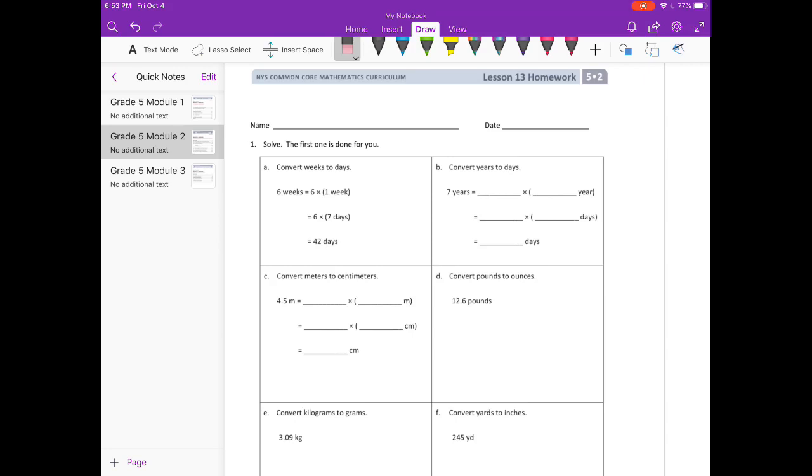Convert years to days. 7 years equals 7 times 1 year which is equal to 7 times, in 1 year there are 365 days. So 7 times 365, let's do that.